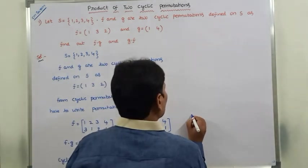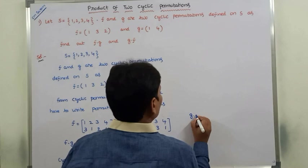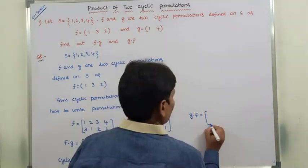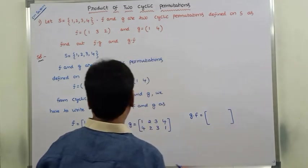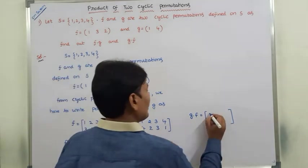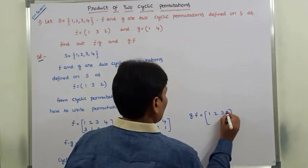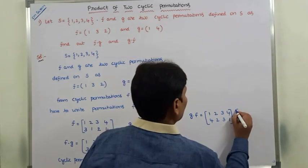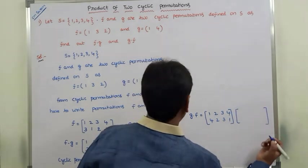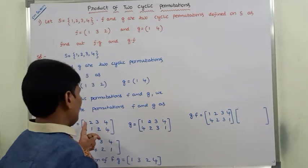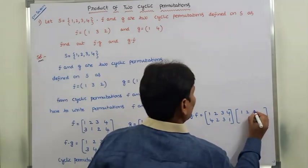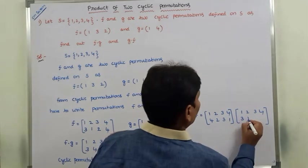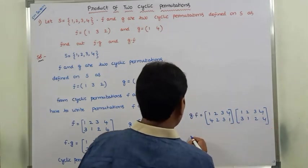Now for the product G∘F. We write permutation G: elements 1, 2, 3, 4 in the first row with images 4, 2, 3, 1. And permutation F: elements 1, 2, 3, 4 in the first row with images 3, 1, 2, 4.